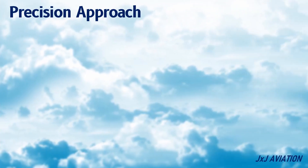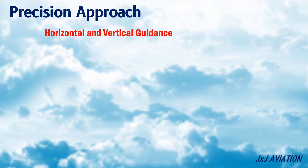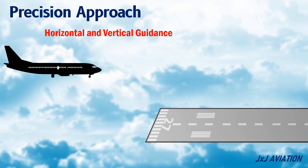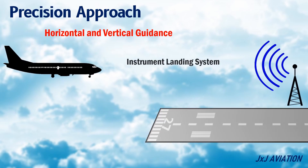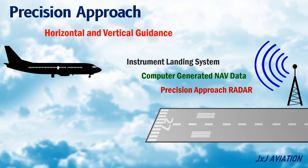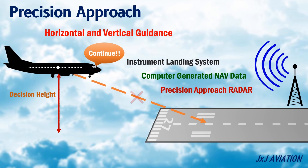What is a Precision Approach? A Precision Approach provides both horizontal and vertical guidance to the aircraft towards the runway in use. A Precision Approach can be done with an Instrument Landing System, or computer-generated navigation data, or Precision Approach Radar. A Precision Approach will include a Decision Height or Decision Altitude. At this height, the flight crew will decide to continue or discontinue the approach.